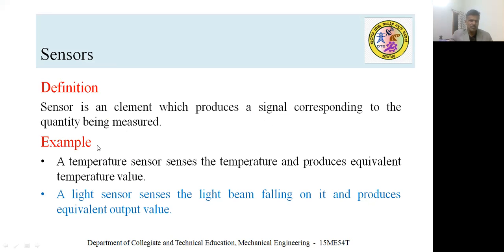For example, a temperature sensor senses the temperature and gives the corresponding equivalent temperature value as output. Similarly, a light sensor senses the light or image of an object and gives the output in the form of binary values or digital numbers.